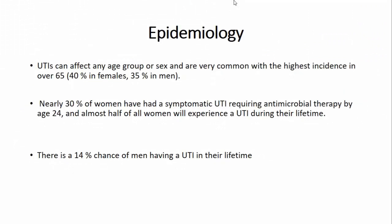Regarding epidemiology, in early adulthood UTI is more common in females, but as patients reach their 60s, the male and female populations have the same UTI incidence and prevalence, because in males prostate disease and obstructive uropathies increase the chances of UTI in old age. So in young patients females are more prone, while in old age both groups are at the same risk.